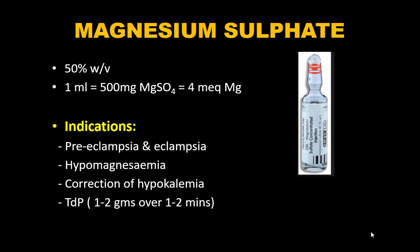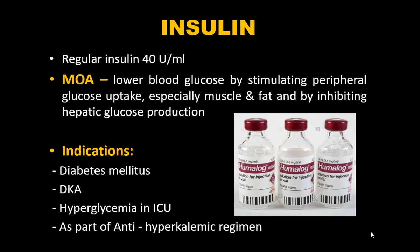Magnesium sulfate is available as 25% and 50% w/v solutions; 1 mL contains 500 mg of magnesium sulfate, equivalent to 4 mEq of magnesium. Indications are pre-eclampsia and eclampsia, hypomagnesemia, correction of hypokalemia, and torsades de pointes — for which 1–2 grams is given over 1–2 minutes.